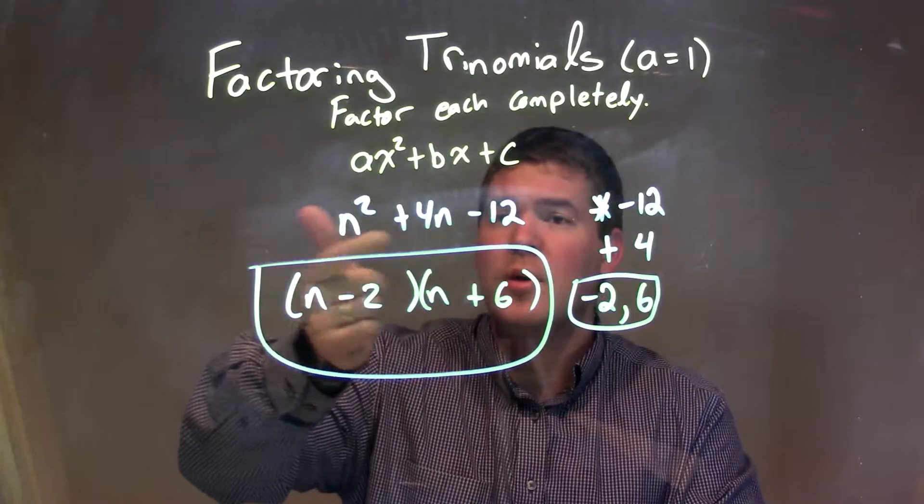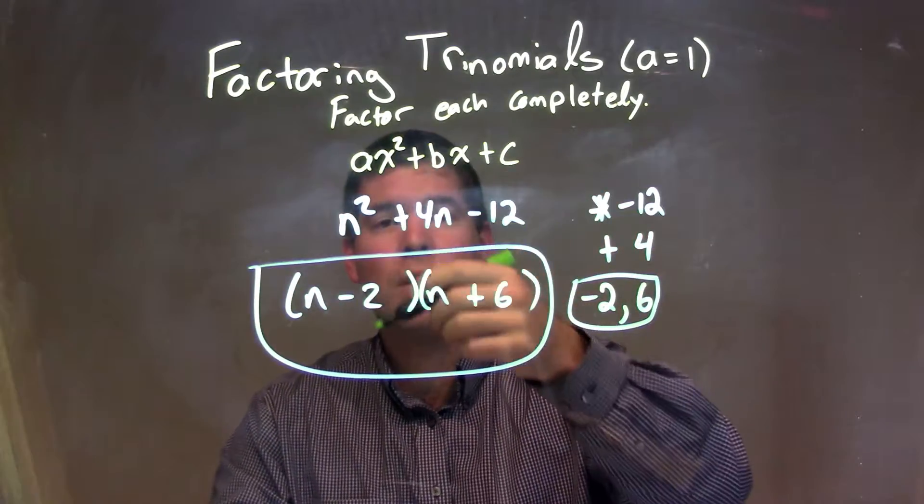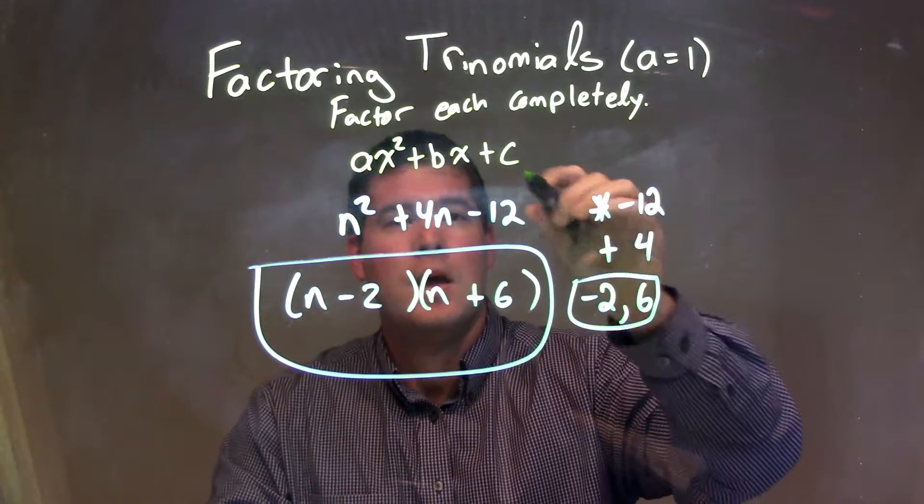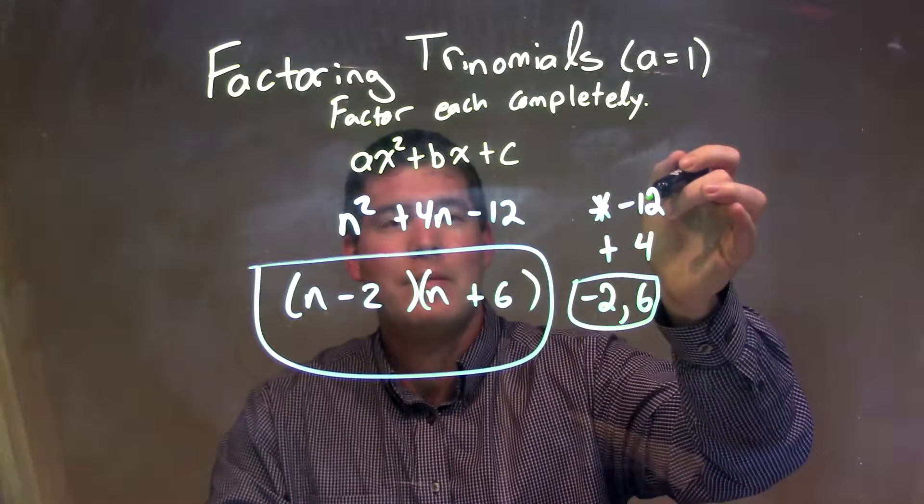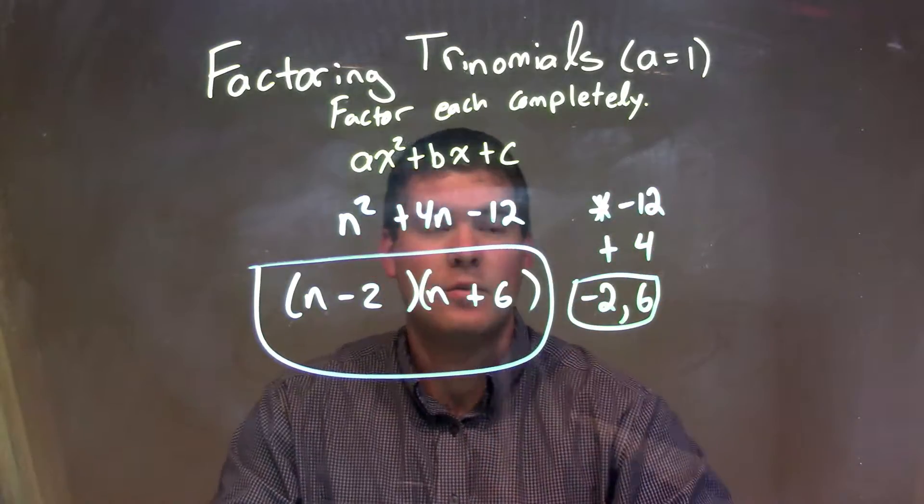So let's recap. We're given n² + 4n - 12, and we need to factor that. Our a value is equal to 1, so we can say, what two numbers multiply to be my c, which is -12, that add to my b value, which is a positive 4?